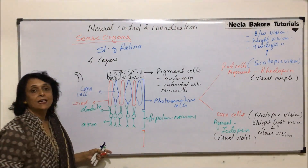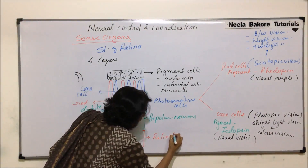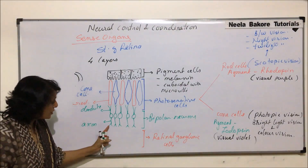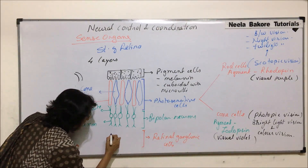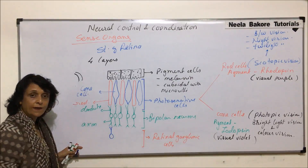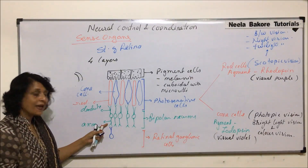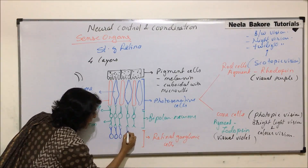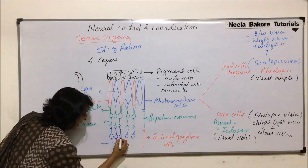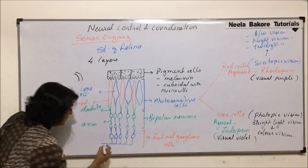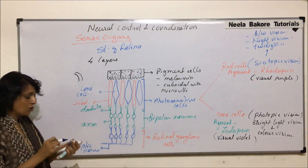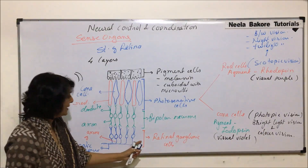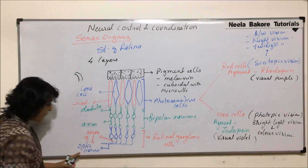The last layer is of ganglionic cells, called retinal ganglionic cells. Their dendrites make synapses with the axons of the bipolar neurons. If we draw these neurons, the dendrite of this neuron makes a synapse with the axon of the bipolar neuron. Their axons ultimately join to form the optic nerve. The optic nerve is formed by the joining of axons of these retinal ganglionic cells.